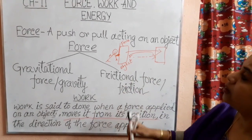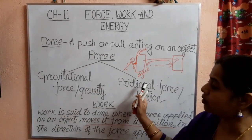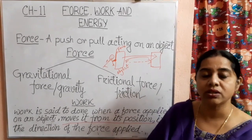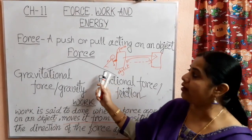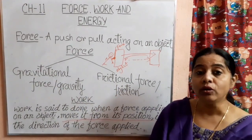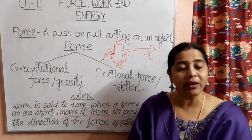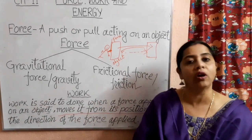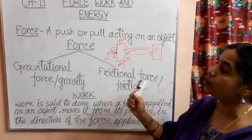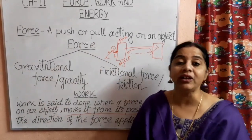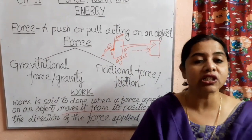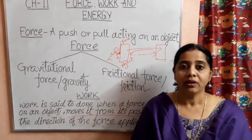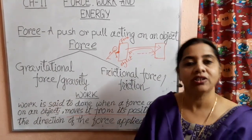So today we learned about force, the two types of force, and work. We also learned about the things that can be done by applying force — force can stop an object, it can move an object, it can change the direction of an object, and it can also change the shape of an object. All of you learn this part of chapter 11 carefully. In our next class, we will discuss about some machines related to work. Thank you.